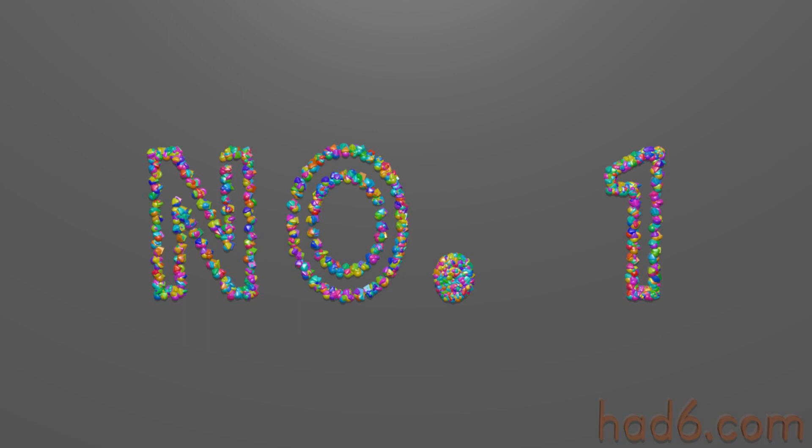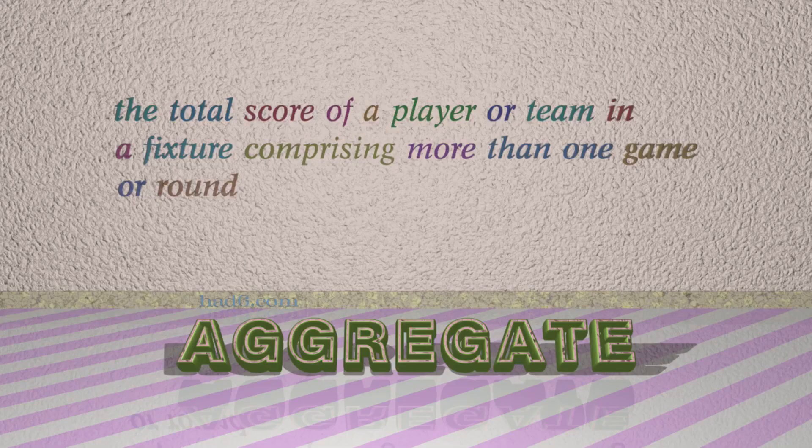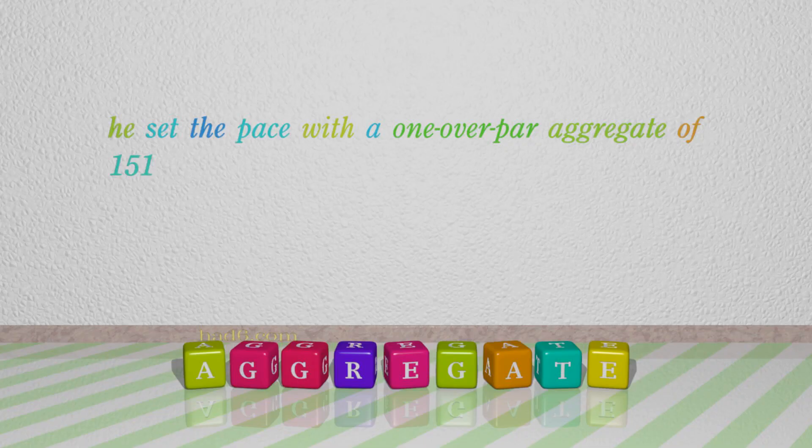Number 1: Aggregate. Which means the total score of a player or team in a fixture comprising more than one game or round. For example: He set the pace with a 1 over par aggregate of 151.